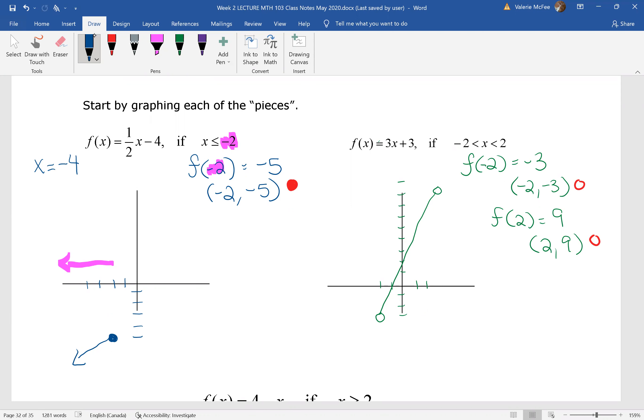If you find the f of negative four, you have one half times negative four minus four. So you end up at negative six. That would be this point here that I have.